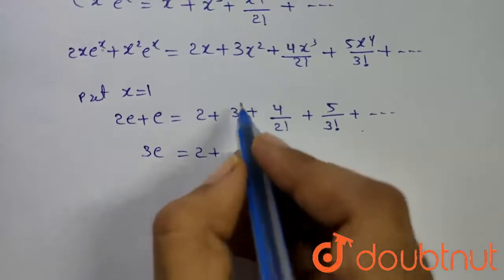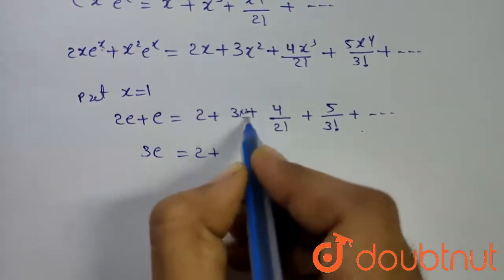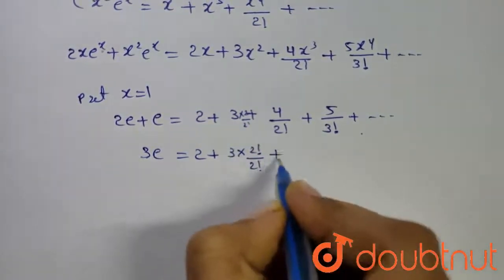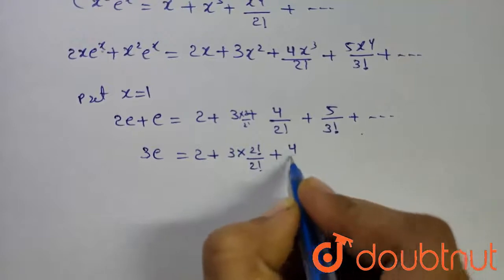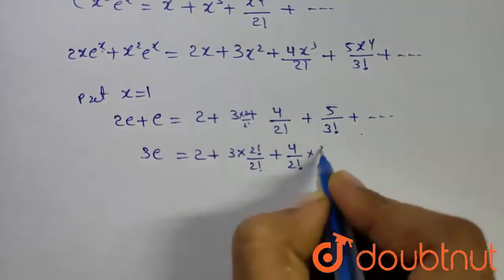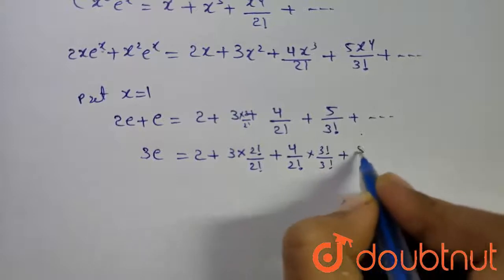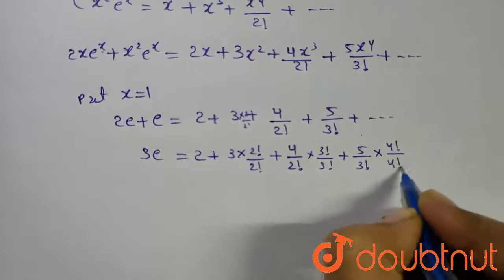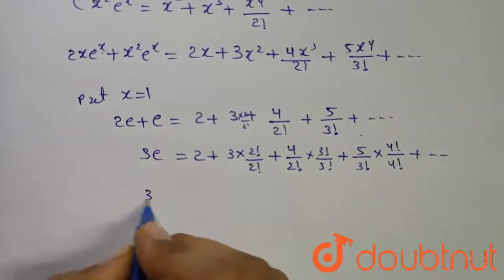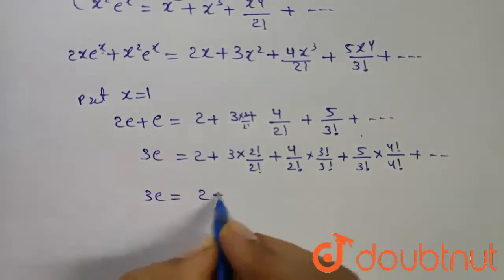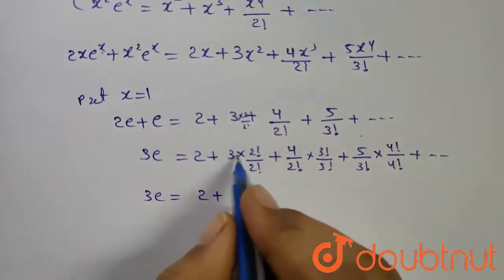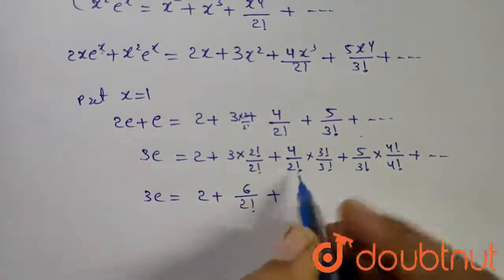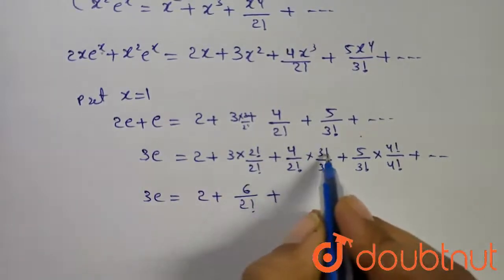Multiplying and dividing by the appropriate factorials on both sides: that is 3 into 2 factorial divided by 2 factorial, plus 4 by 2 factorial into 3 factorial divided by 3 factorial, plus 5 by 3 factorial into 4 factorial divided by 4 factorial, and so on. So 3e equals 2 plus 3 into 2 factorial, which is 6 divided by 2 factorial, plus 4 into 3 factorial,